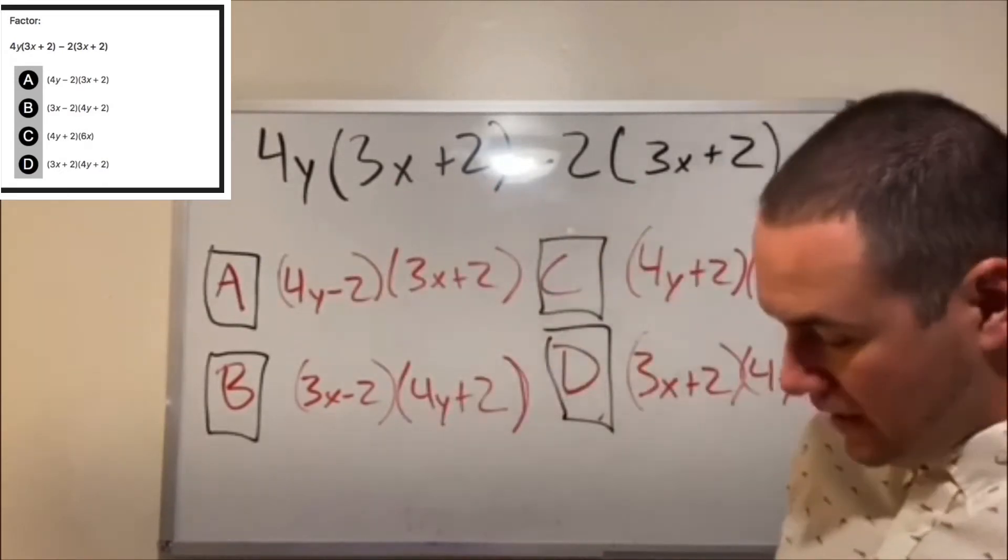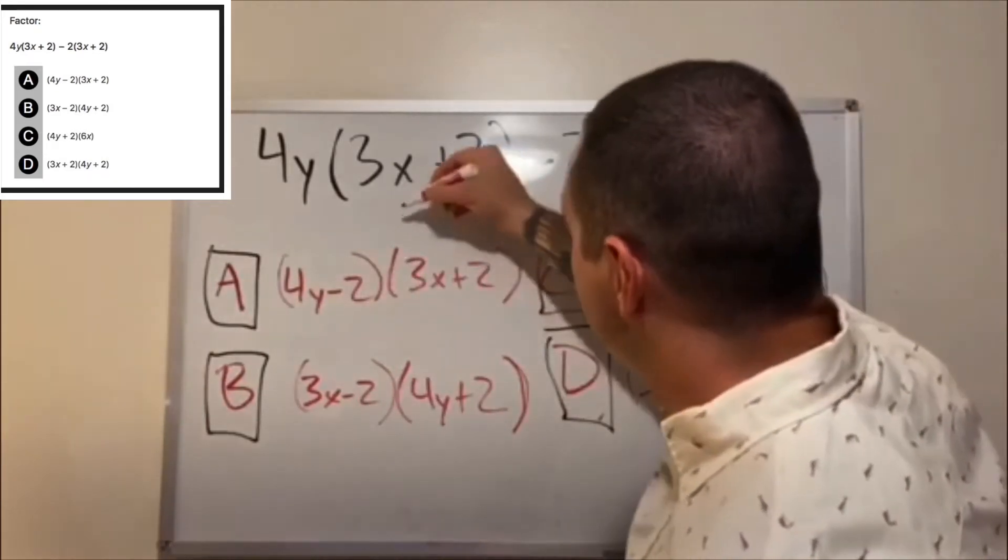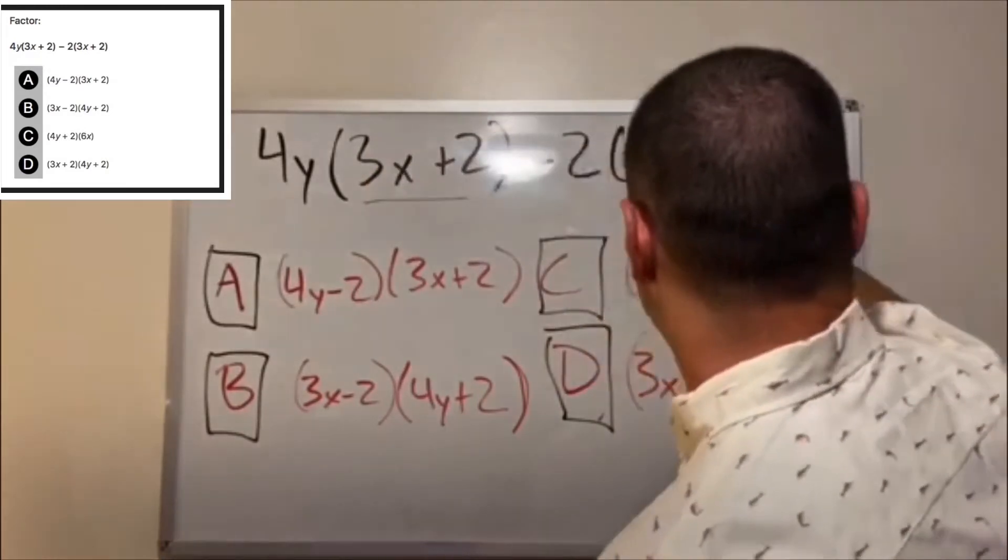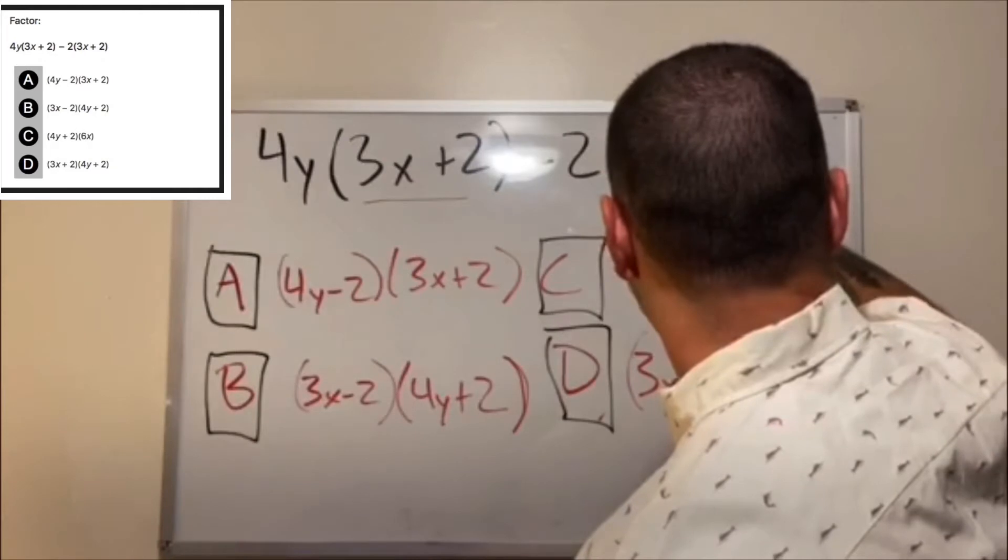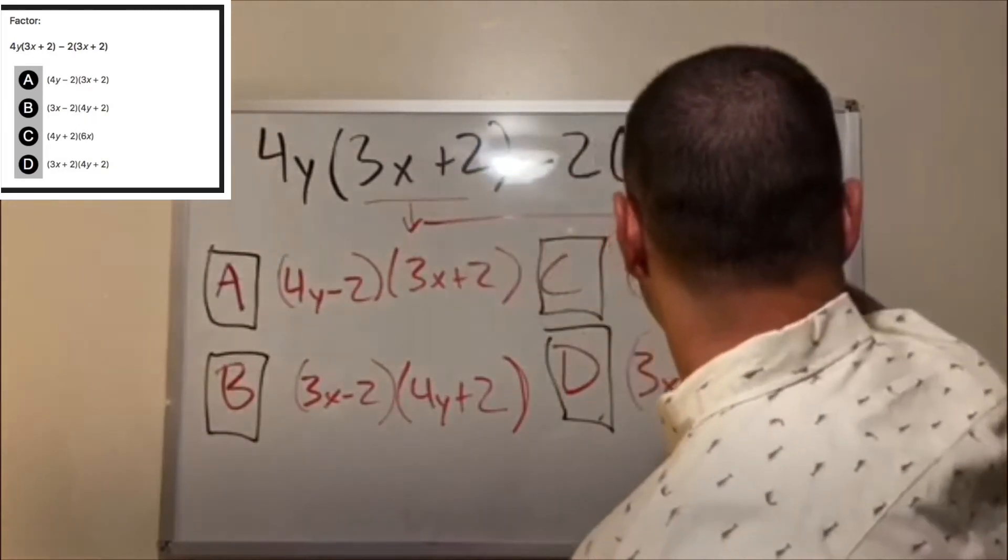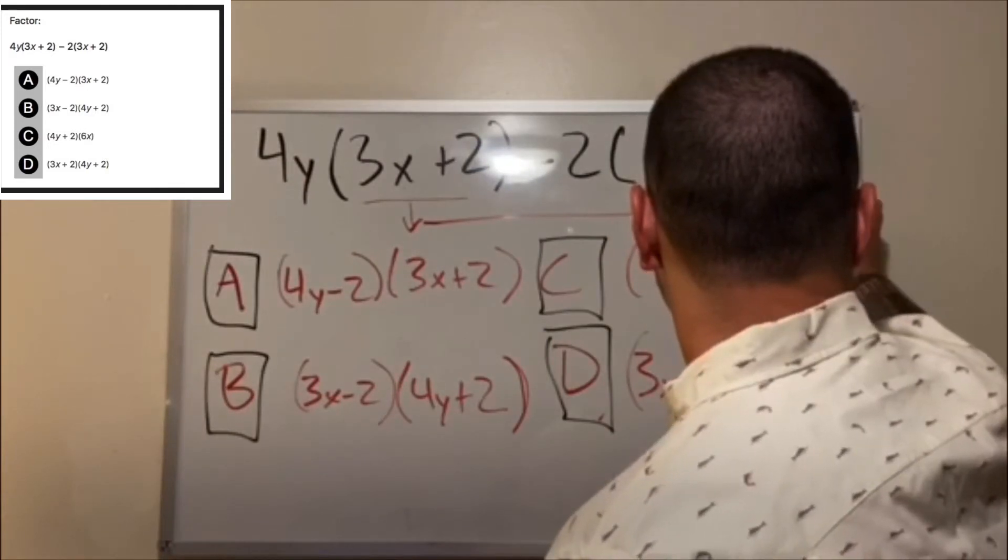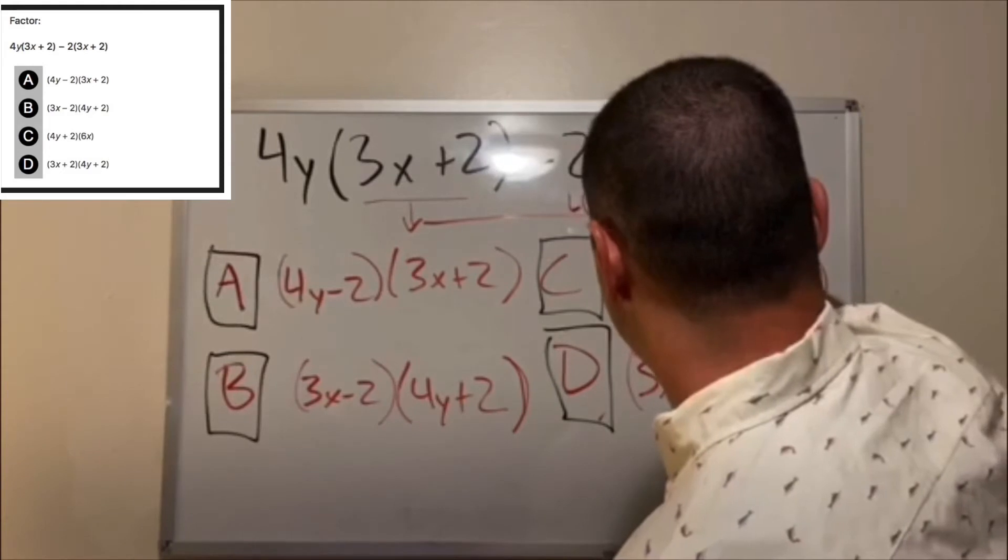All right, so the way you do that is you look at both terms and you figure out what's the same in each of them. You'll notice here 3x+2 right there and 3x+2 right there. So what you do is you actually pull these guys out and you put them together, so you have 3x+2, and then all you have left over is 4y minus 2.